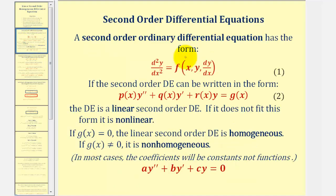In our previous lesson, we started by defining a second-order ordinary differential equation given by equation one, and then if equation one fits the form of equation two, we have a linear second-order differential equation. And if g of x, the function on the right, is equal to zero, we have a linear second-order DE that is also homogeneous. In our case, the coefficients won't be functions of x — they'll be constants — so our equations will fit this form here.